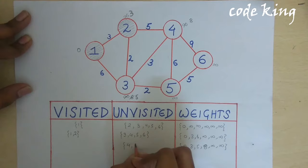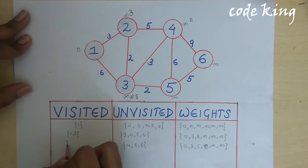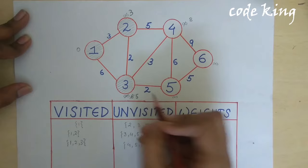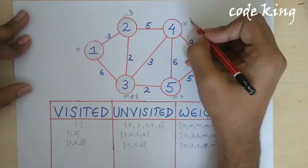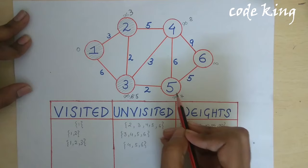The remaining unvisited nodes are 4, 5, 6. We mark node 3 visited since it has the minimum weight among unvisited nodes, and explore its neighbors. Its neighbor node 5: 5 plus 2 is 7, less than infinity, so we update it. Another neighbor: 5 plus 3 is 8, which is not less than the current value of 8, so we do not update it. From the remaining nodes, node 5 has the minimum weight.